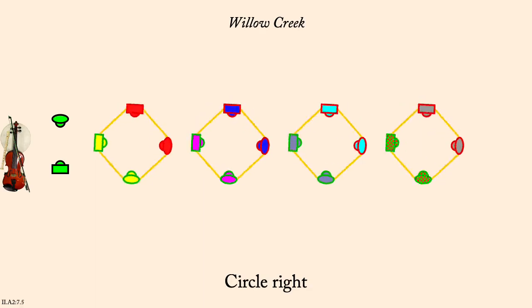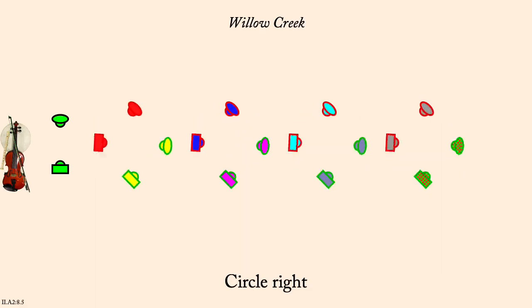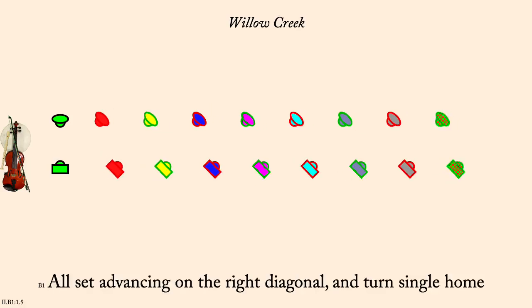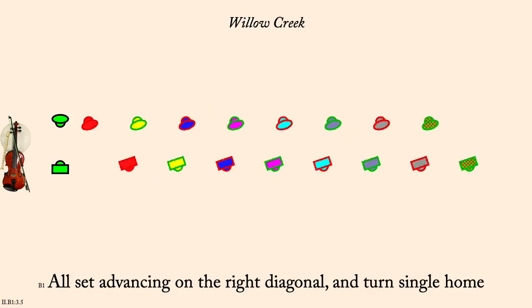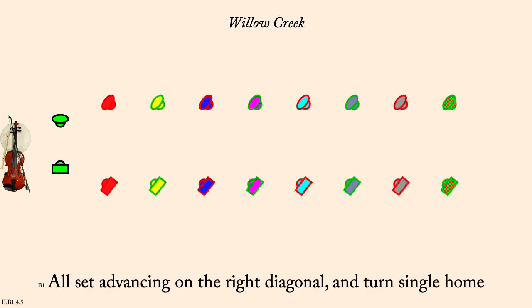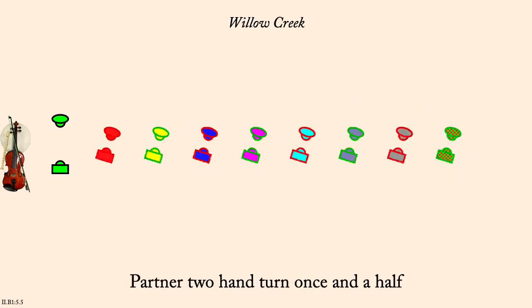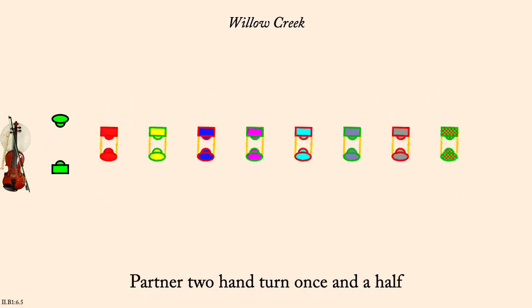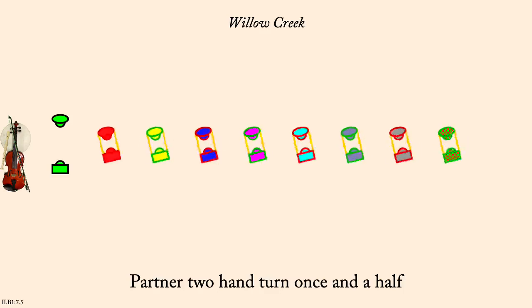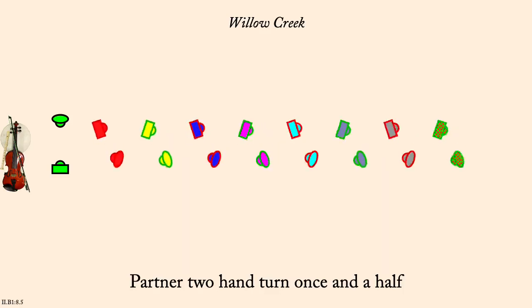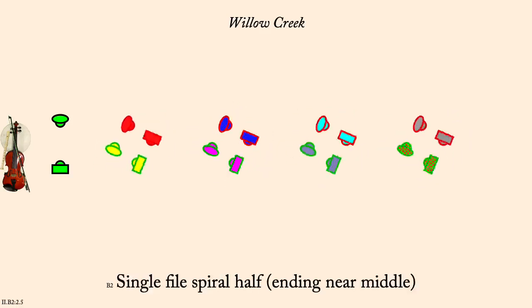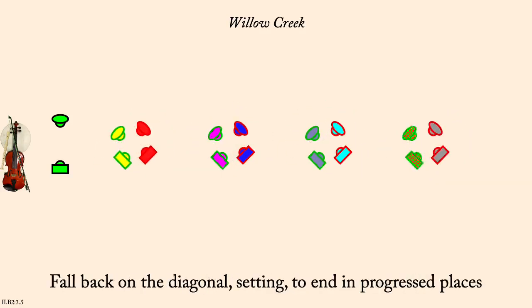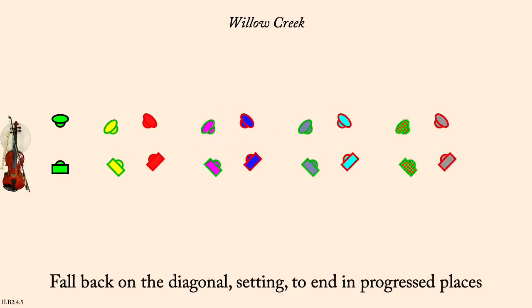Set advancing on right-diagonal and turn single back. Partner two-hand turn once and a half. Single file spiral clockwise half. Fallback setting. Left hands across.